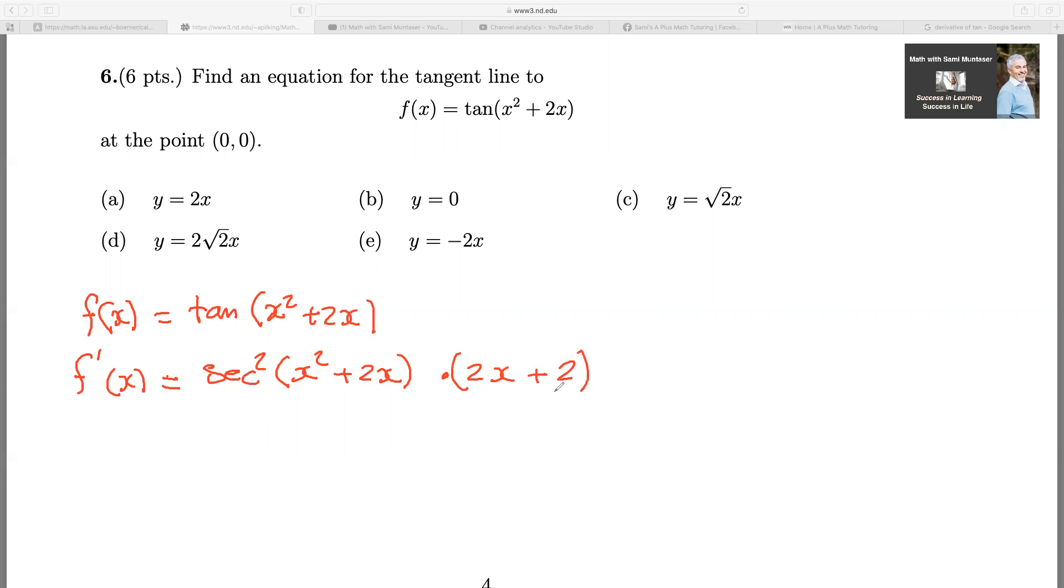Now this part right here, if you want to rewrite it, goes right in the front. You're not taking the secant of this, you're taking the secant only of this, this gets multiplied into the secant. So you have 2x plus 2, the secant squared of x squared plus 2x, which is the angle right here.